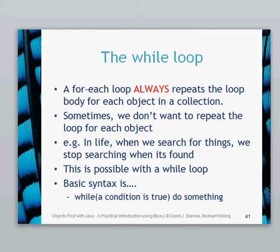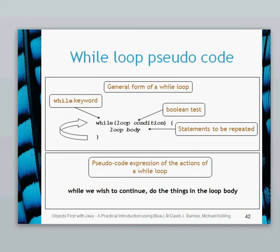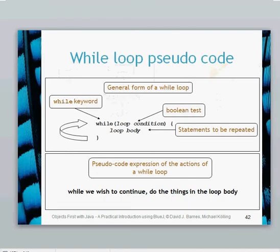One of the things we use a while loop for is searching, and we can implement it so that when we find something, we can stop searching. The basic syntax of a while loop is: while a certain condition is true, then do something. Let's have a look at the Java pseudocode for the while loop. It's similar to the for-each loop in that it needs braces at the start and end of the loop body.